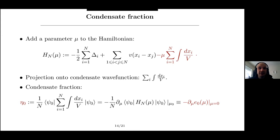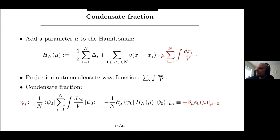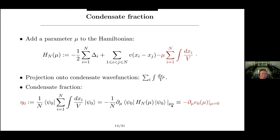There's a question about the notation: the subscript in the formula is mu equals zero (there's a typo — the subscript is right next to the equals sign). Following this prescription, we get a prediction for the condensate fraction using the simple equation and the big equation.